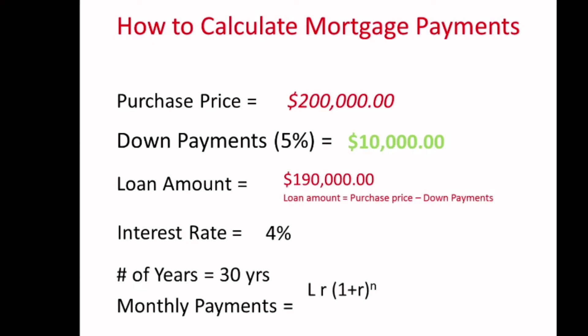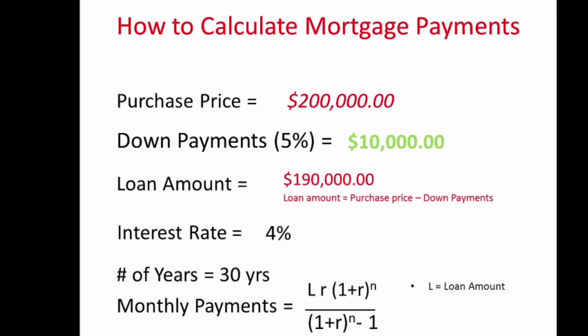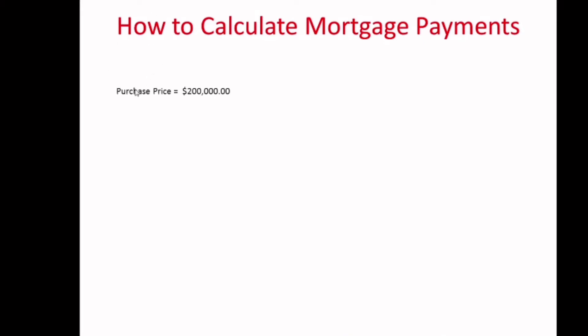The monthly payment calculation formula is: loan amount times interest rate r, times (1 + r) to the power of n, divided by (1 + r) to the power of n minus 1. That is your monthly payment calculation formula. Let's calculate this by putting it into the calculator to see how it works.